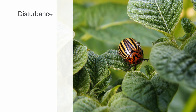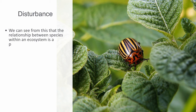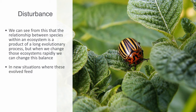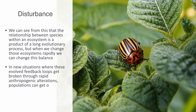The relationship between species within an ecosystem is typically a product of a long evolutionary process. But when we change these ecosystems rapidly, we can change this balance. For example, there are many cases where insects become pests when displaced from their native ecosystem. Most agricultural pests live innocuous lives in their native habitat but become troublesome when introduced into a new region or agricultural system. In new situations where evolved feedback loops get broken through rapid anthropogenic alterations, populations can get out of control, affecting the homeostasis of the macro-ecosystem.